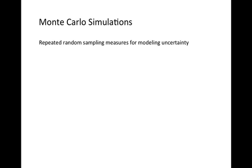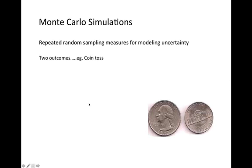In this video I will try to present a Monte Carlo simulation for events having two outcomes. A simple example would be that of a coin toss in which the outcomes are heads and tails.